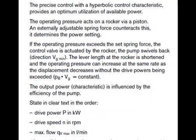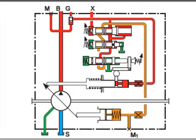If the operating pressure exceeds the set spring force, the control valve is actuated by the rocker and the pump swivels back toward VG min. The lever length at the rocker is shortened and the operating pressure can increase at the same rate as the displacement decreases, without the drive power being exceeded — Pb × Vg equals constant. The output power characteristic is influenced by the efficiency of the pump.